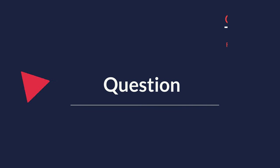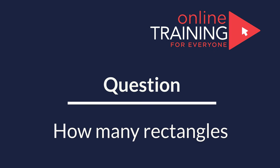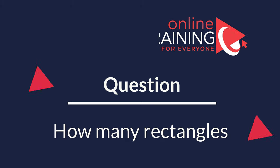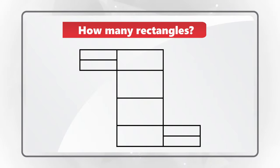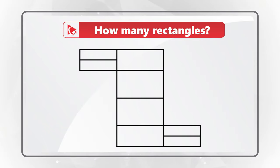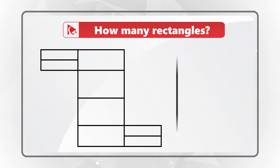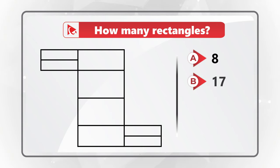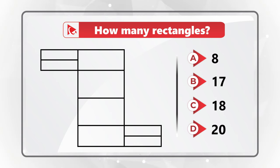Here's an amazing question to test your analytical and spatial reasoning skills. You need to determine how many rectangles are present in the picture. Take a close look at the shape presented here and choose one of four choices: A) 8, B) 17, C) 18, or D) 20 rectangles. Give yourself a few seconds — maybe pause this video to see if you can count all of them.